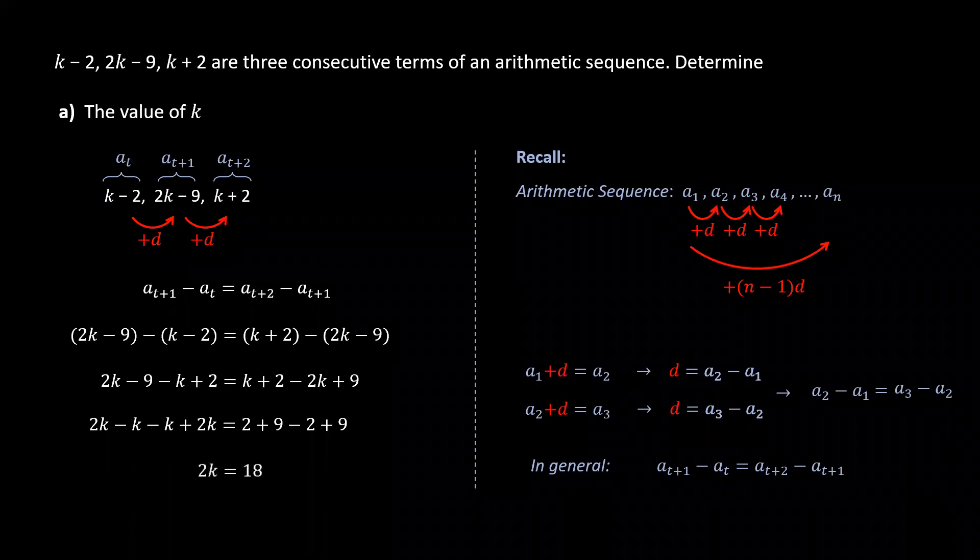And finally, combine like terms and divide both sides by the numerical coefficient of k which is 2 to obtain k. So k is equal to 9.